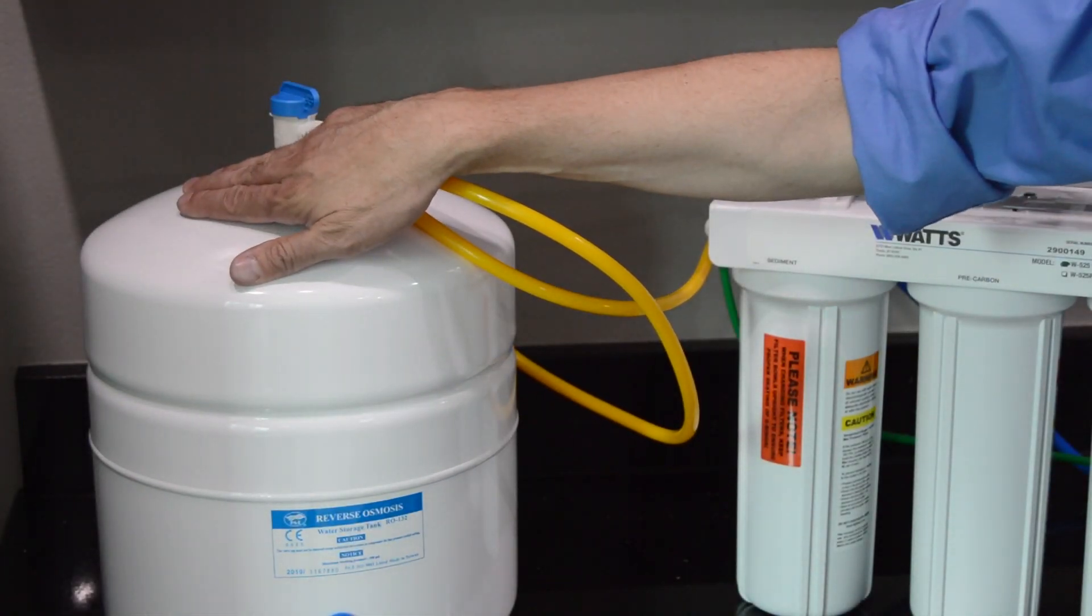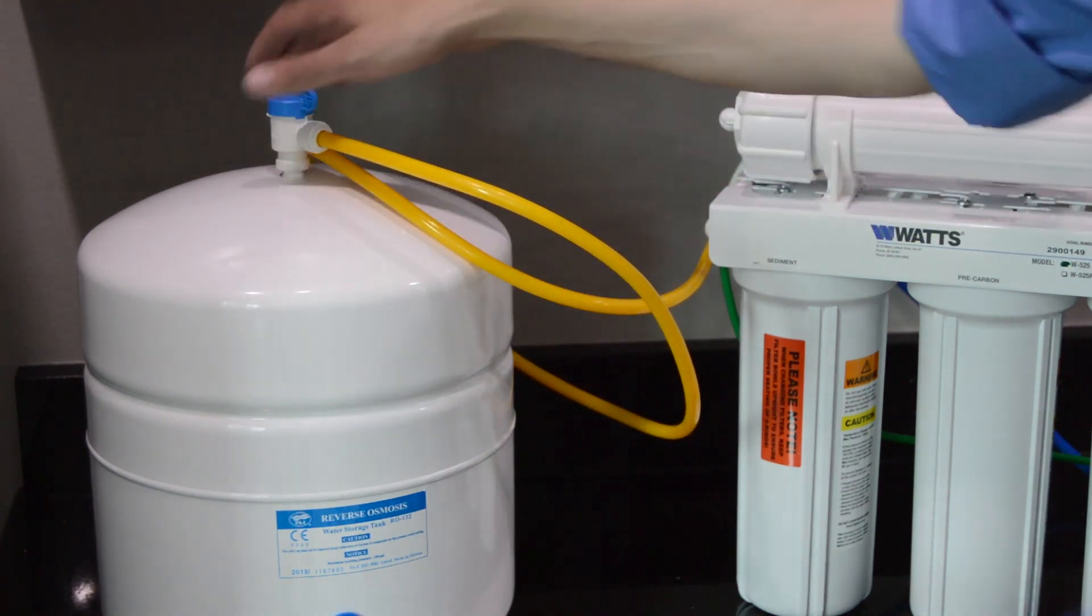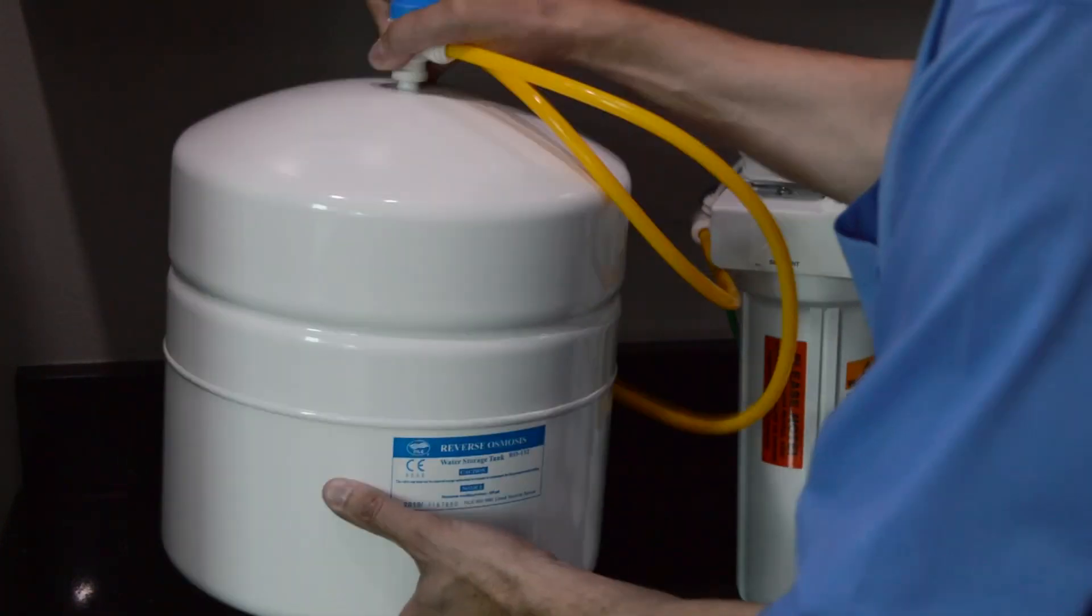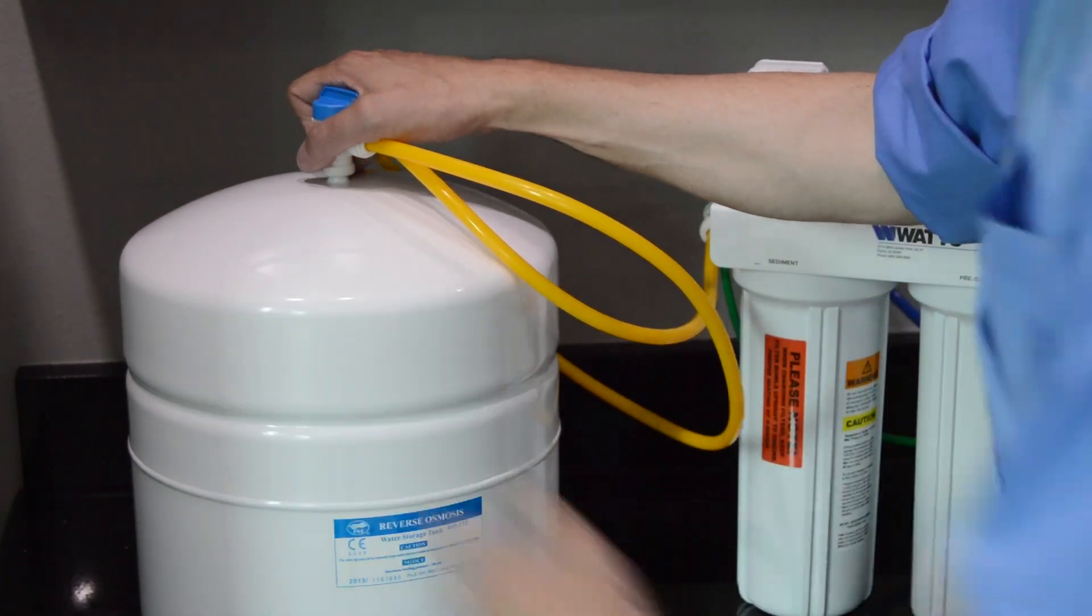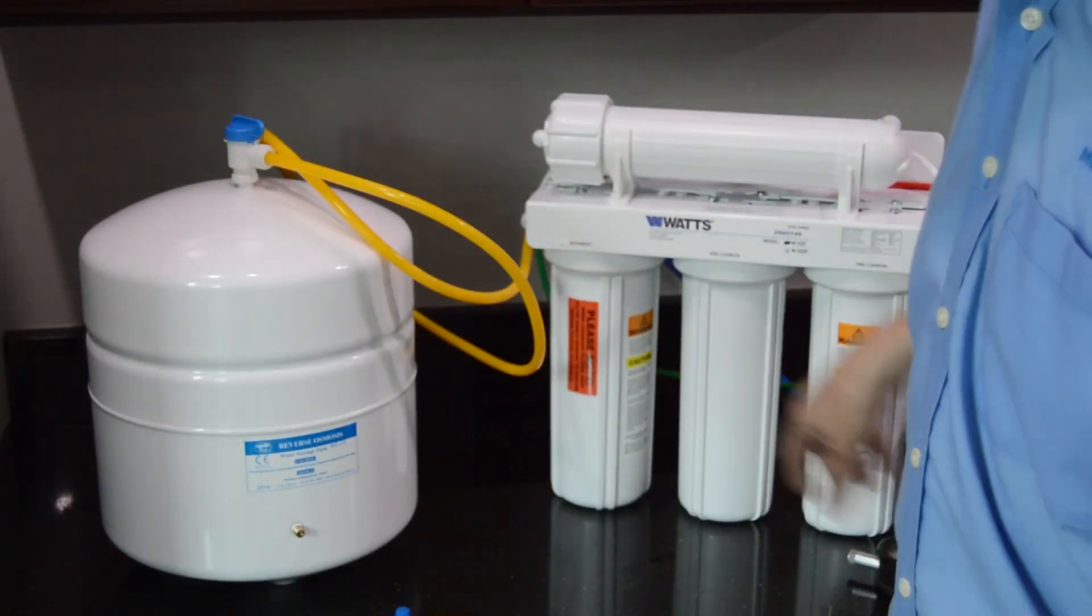Your RO system requires the right amount of pressure inside the holding tank to operate at its best. You can first check the tank pressure when the tank is empty. The pressure can be checked from the Schrader valve at the bottom of the tank.